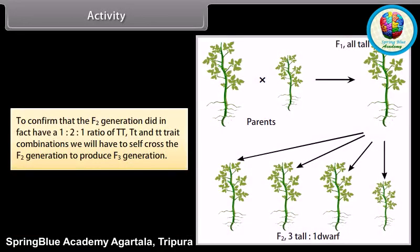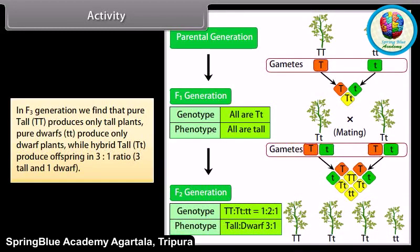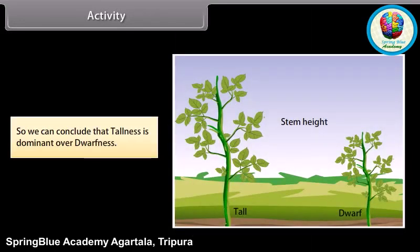Activity. To confirm that the F2 generation did in fact have a 1:2:1 ratio of TT, Tt, and tt trait combinations, we will have to self-cross the F2 generation to produce the F3 generation. In F3 generation, we find that pure tall (TT) produces only tall plants, pure dwarfs (tt) produce only dwarf plants, while hybrid tall (Tt) produces offspring in a 3:1 ratio — 3 tall and 1 dwarf. So, we can conclude that tallness is dominant over dwarfness.